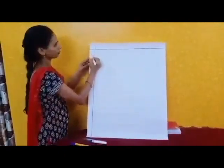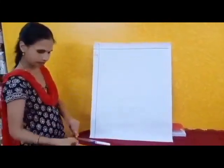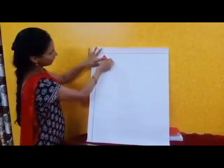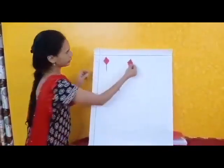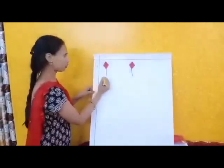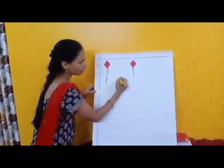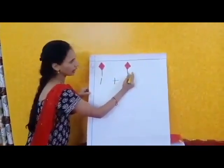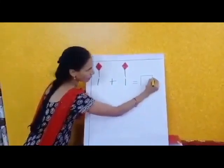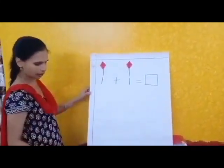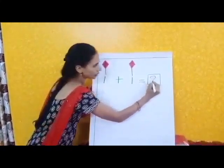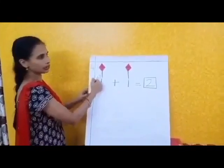Fourth one, children. What is this, children? Kites. How many kites here? One. And what should I keep here? Plus sign. And here, how many? One. Equal — two. Box. One, two. Total, how many kites are there? Two.